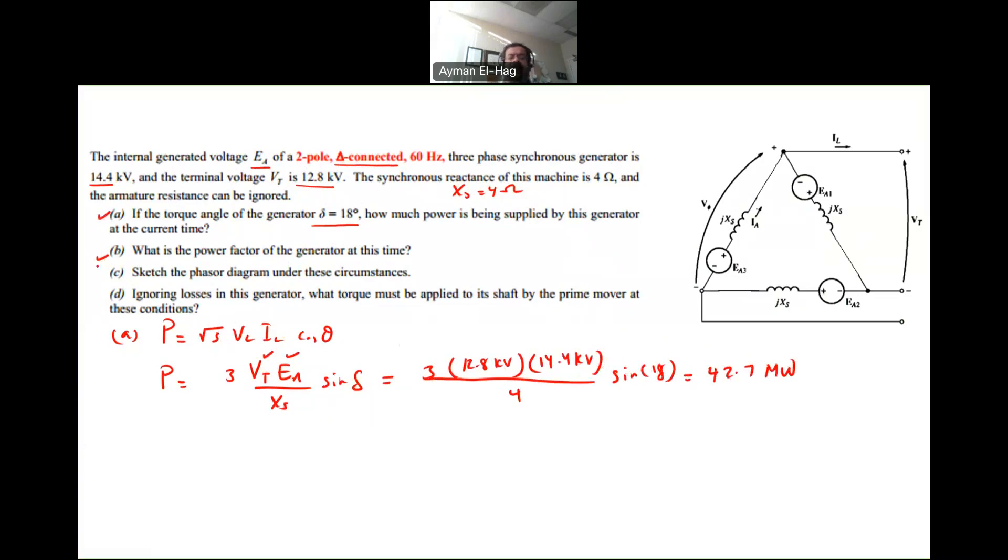Part B: what is the power factor of the generator at this time? Now, we are not given the load here. So the power factor is actually the angle between the IA and the V terminal. That is the definition of the power factor of a synchronous generator, which is basically the angle of the load. But we don't know anything about the load here.